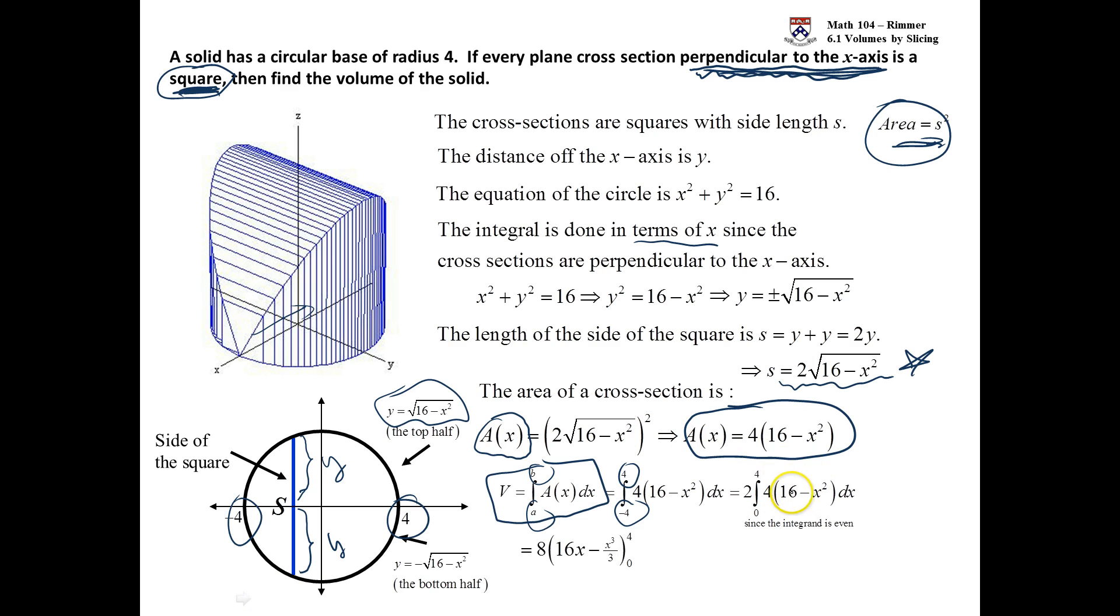We pull this 4 out. We integrate 16, we get 16x. We integrate x², we get x³ over 3. Now we have to only focus on plugging in 4, because when we plug in 0, conveniently, we get 0. The 8 comes from the 2 and the 4 being multiplied.